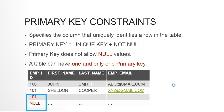What primary key basically does is it specifies the column — or a set of columns — that uniquely identifies a row in a table. When you declare a column as a primary key, say employee ID, the value in that primary key column will never be repeated, and it will never contain null data.